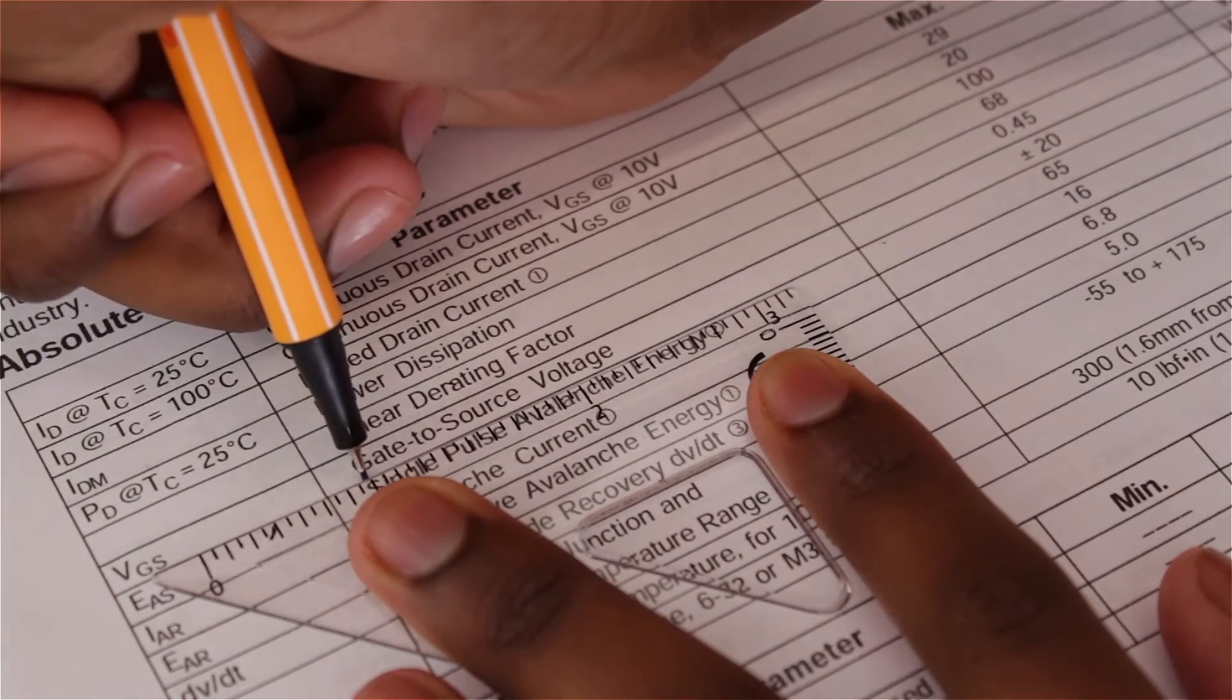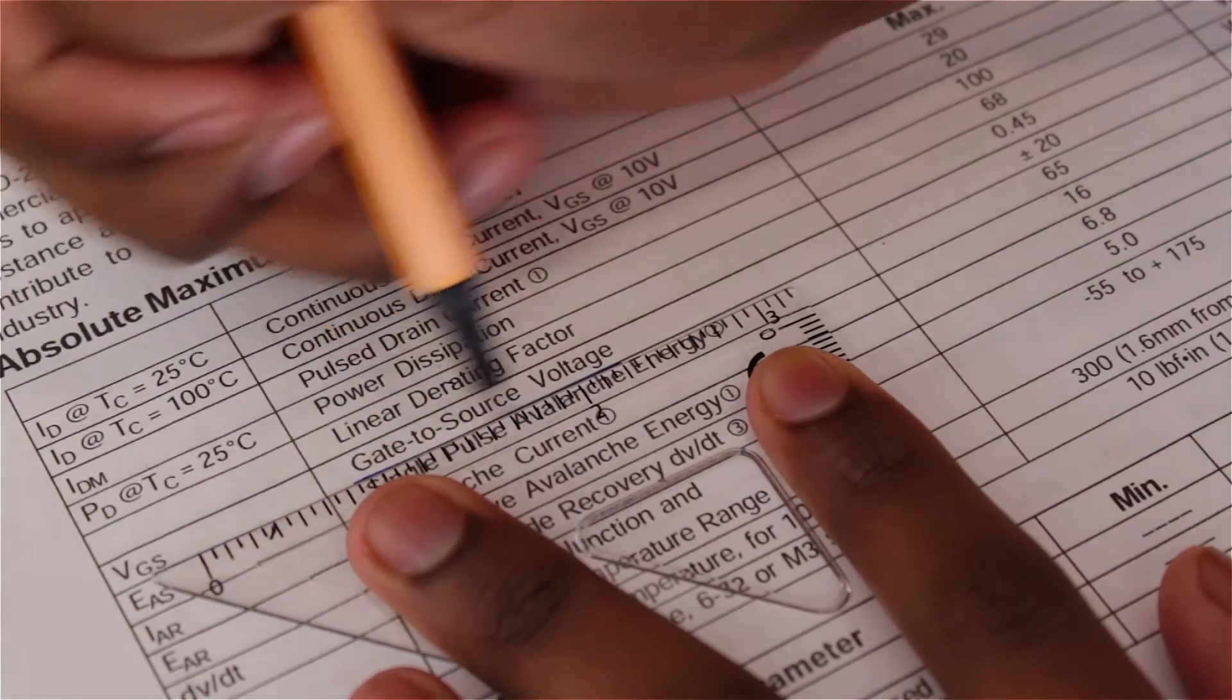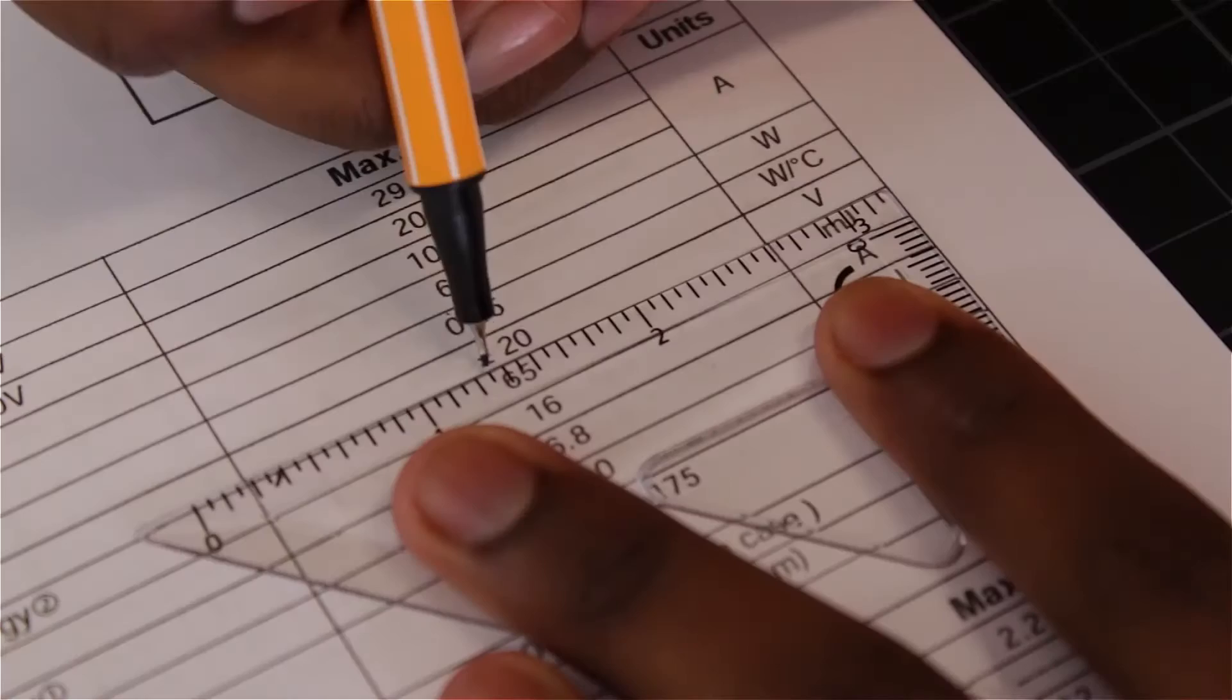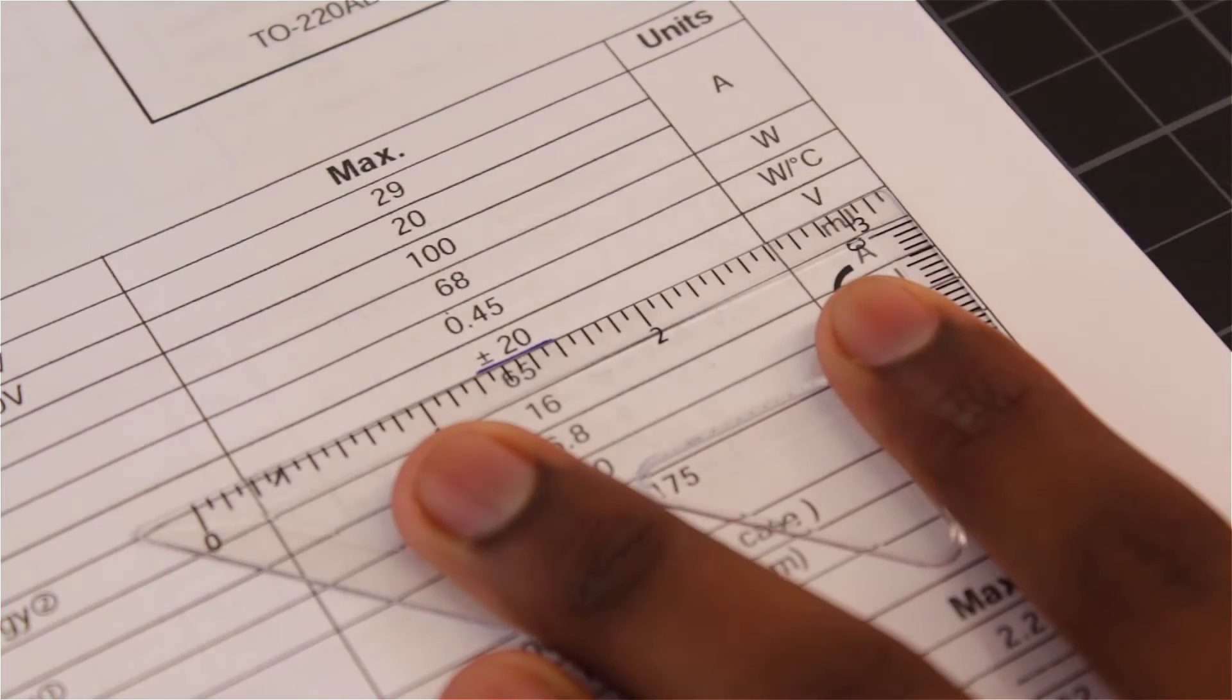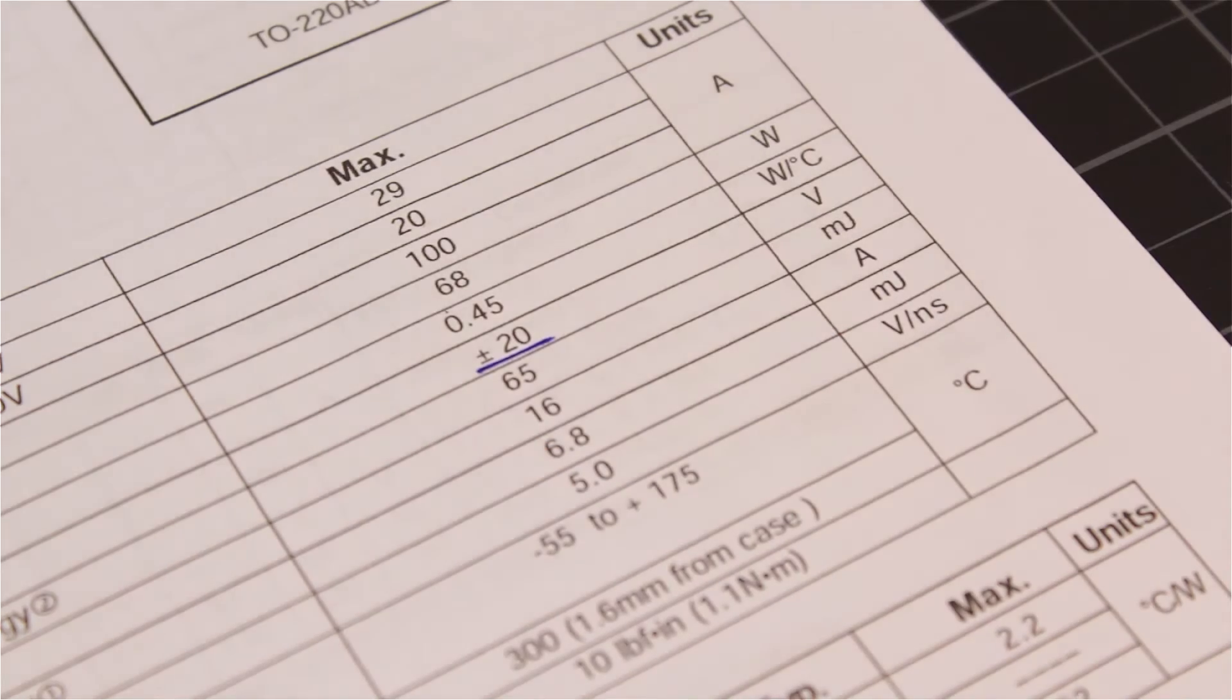Another important thing in the datasheet is the gate to source voltage. This is the theoretical maximum voltage we can put at the gate before we destroy the MOSFET. For this one, it's 20 volts.